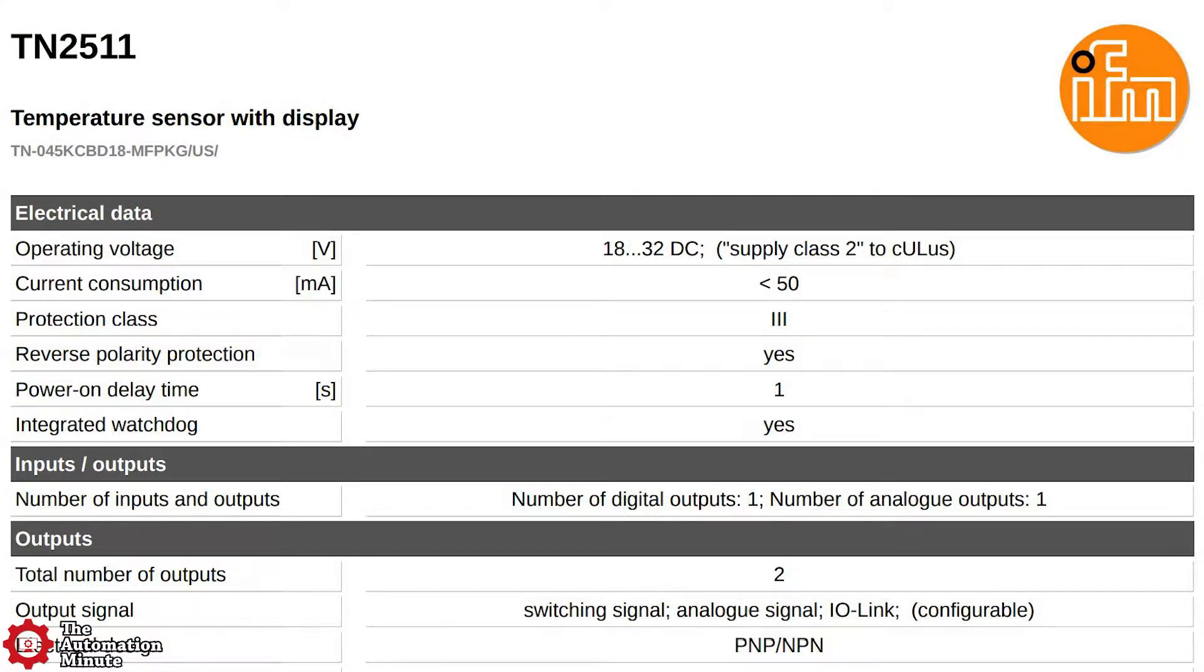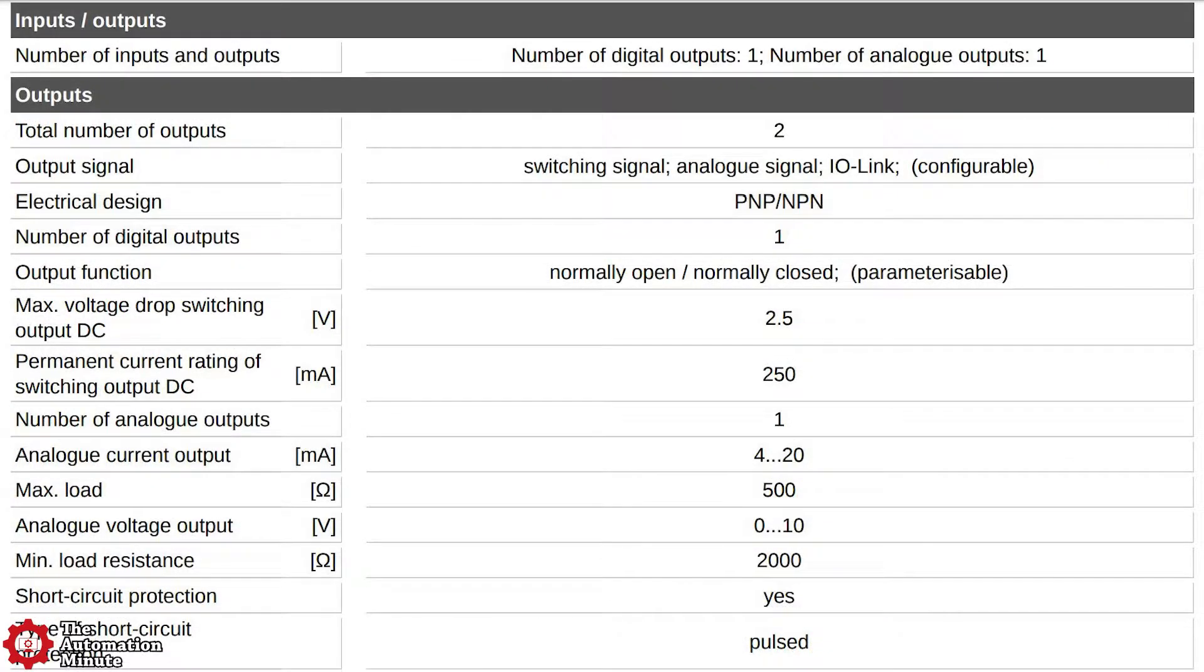Its operating voltage range is 18 to 32 VDC with reverse polarity protection and it consumes less than 50 milliamps. The sensor comes with one analog output and one digital output as well as support for IO-Link.